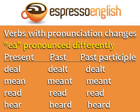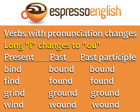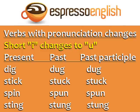Another group is when the long I changes to OU: bind, bound, bound; find, found, found; grind, ground, ground; wind, wound, wound. Short I can change to U: dig, dug, dug; stick, stuck, stuck; spin, spun, spun; sting, stung, stung.